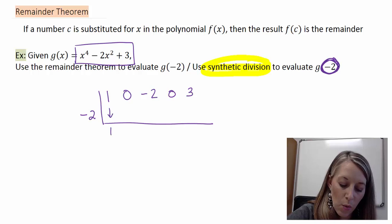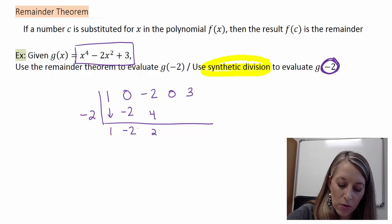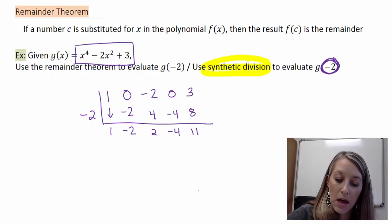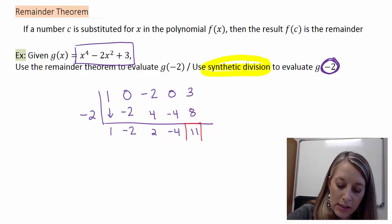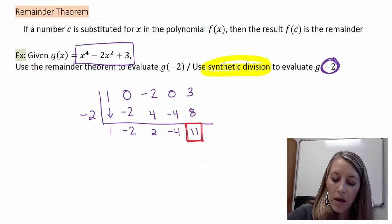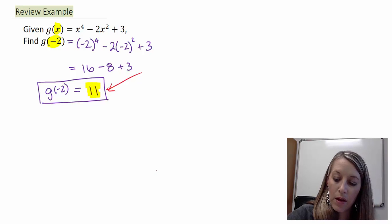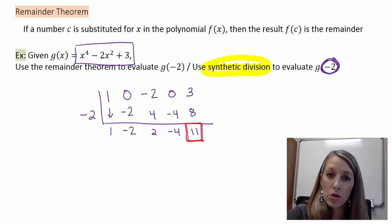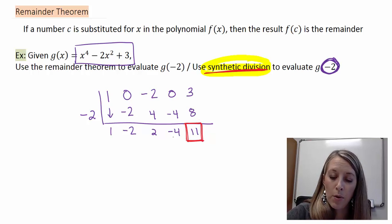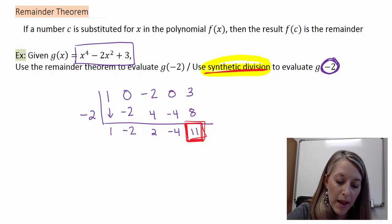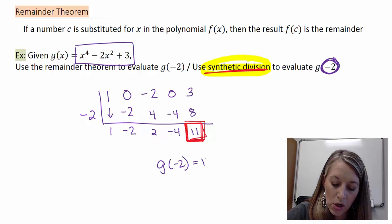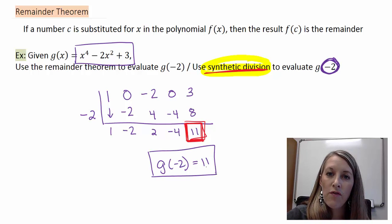Following the process: bring down the 1, multiply gives negative 2, add gives negative 2, multiply gives positive 4, add gives positive 2, multiply gives negative 4, add gives negative 4, multiply gives positive 8, and adding gives 11. The last digit is always the remainder, so my remainder is 11. We also got 11 when we substituted directly — that's exactly what the remainder theorem says. Whether you substitute in negative 2 or use synthetic division, you get the same result. So this is an additional way to evaluate functions like these.